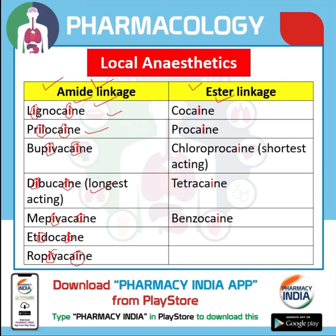And whichever local anaesthetic has only a single 'i' in its spelling, that is ester linkage. For example: cocaine — ester linkage; procaine and chloroprocaine, which is the shortest acting local anaesthetic; tetracaine and benzocaine — all are ester linkage. Students, I hope you like this video.